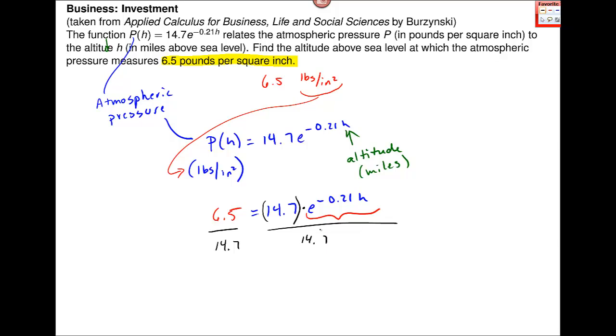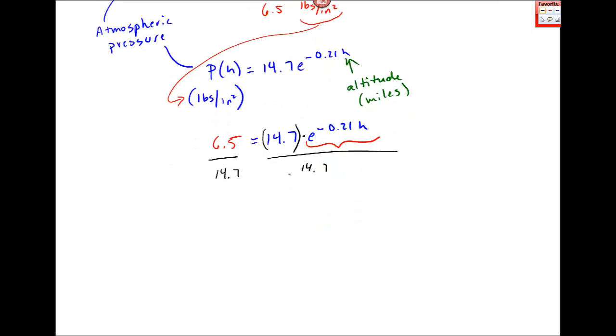Let me see on my calculator. 6.5 divided by 14.7. On this left side I get 0.44217, although I will likely keep this just like it is - 6.5 over 14.7 - and make sure I round at the end.